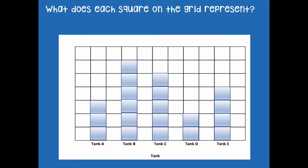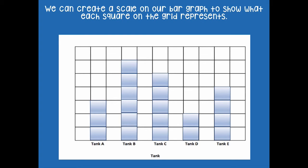What does each square on the grid represent? This square right here represents five fish. We can create a scale on our bar graph to show what each square represents. We're going to look at the horizontal axis, which goes from side to side, and label the vertical axis. We start at zero, then 5, 10, 15, 20, 25, 30, 35.